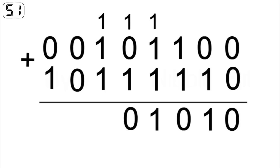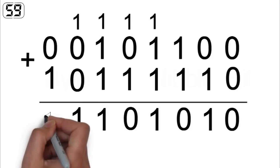1 plus 1 plus 1 is 3, so that becomes 11. So drop a 1, carry a 1. 1 plus 0 equals 1, and 0 plus 1 equals 1.